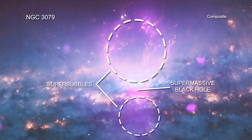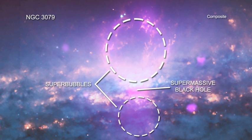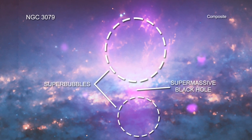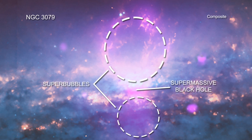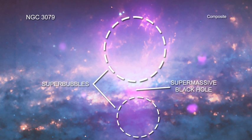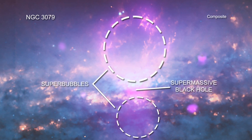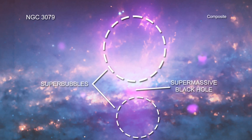The super bubbles in NGC 3079 provide evidence that they, and structures like them, may be the source of extremely energetic cosmic rays, which are not rays, but high-energy particles that regularly bombard the Earth.